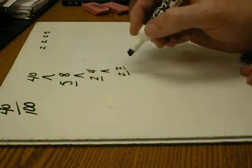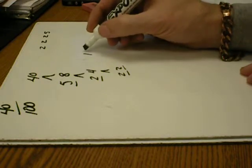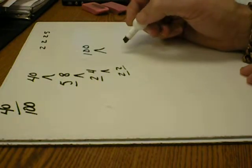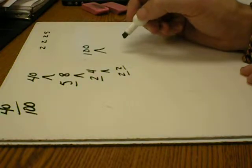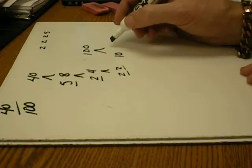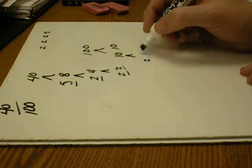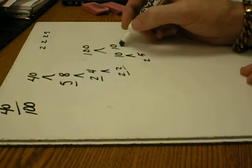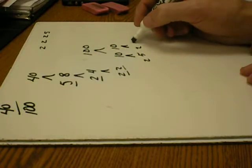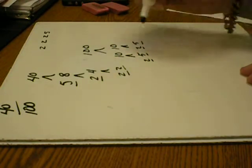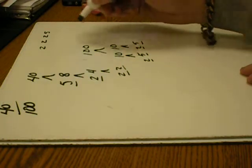Now I can do a factor tree for 100. I can use 10 times 10. 2 times 5. And 2 times 5. So the factors would be 2, 2, 5, 5.